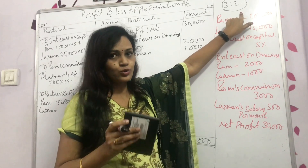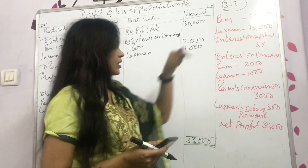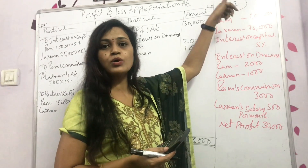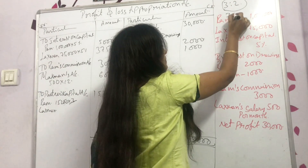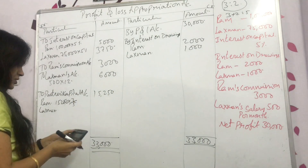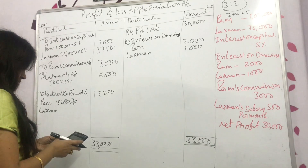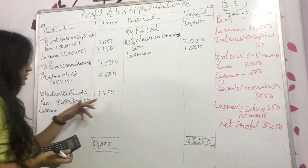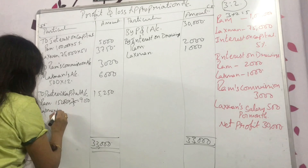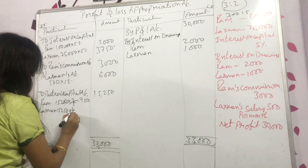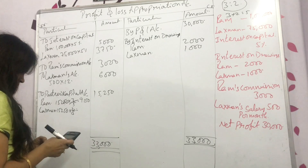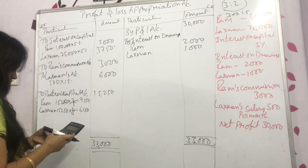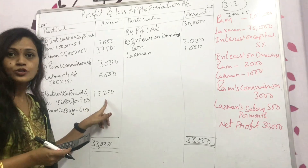Always remember: with two names and a ratio, the first ratio belongs to the first name. So Ram's ratio is 3, Lakshman's is 2. Ram's share: 15,250 × 3 ÷ 5 = 9,150. Since there are only two partners, you can subtract: 15,250 − 9,150 = 6,100 for Lakshman. Or calculate separately: 15,250 × 2 ÷ 5 = 6,100.